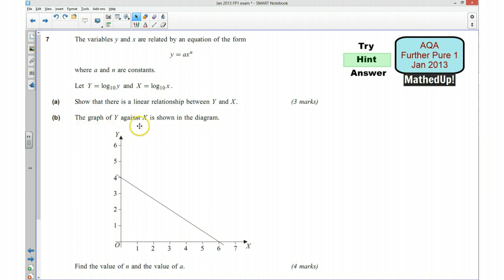Part B says the graph of Y against X is shown in this diagram here and we need to find the value of N and the value of A. By this stage, we will have found a linear relationship between Y and X. So we need to decide what the gradient of this graph is and what the Y intercept is and we can use that information to work out the value of N and the value of A.